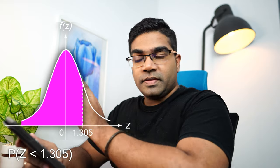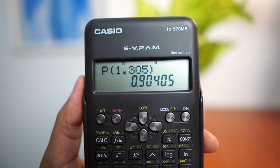Press equals to. And this is your answer. The probability of Z being less than 1.305 is 0.90405.